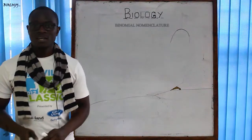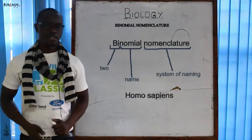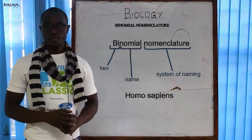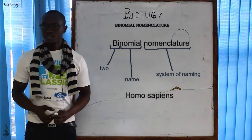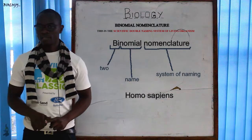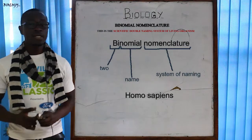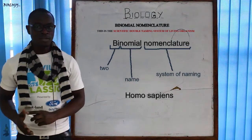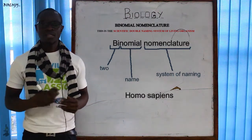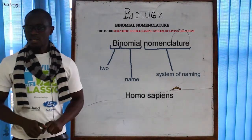Hello again and welcome to this session where today we are going to discuss about binomial nomenclature. What is binomial nomenclature? If you have been asked this question in an exam, you will say that binomial nomenclature refers to the scientific double naming system of organisms. Remember: scientific and double naming — if you only include double naming without scientific, most likely your answer will be wrong.